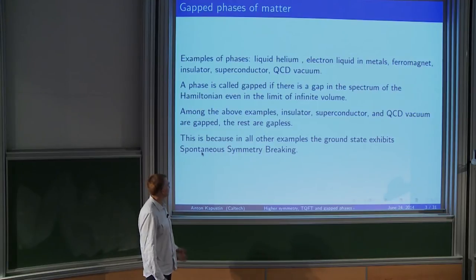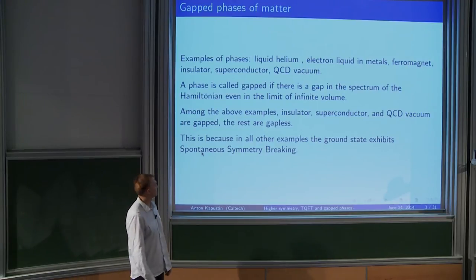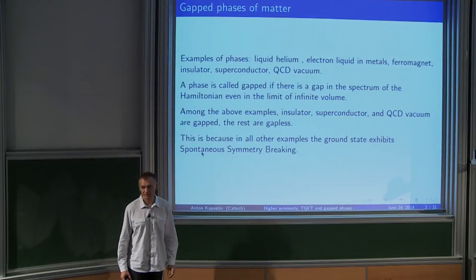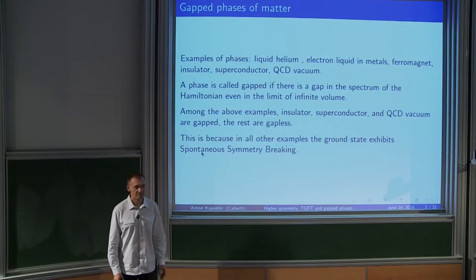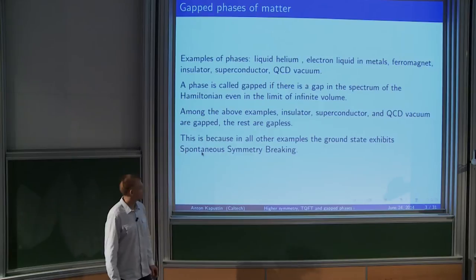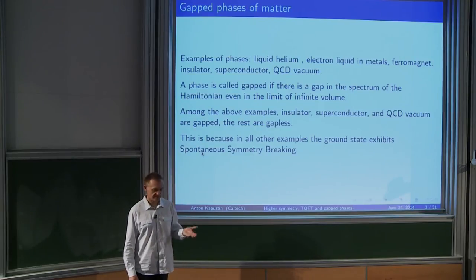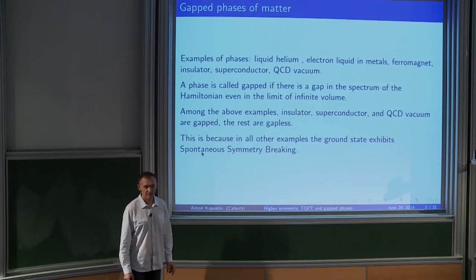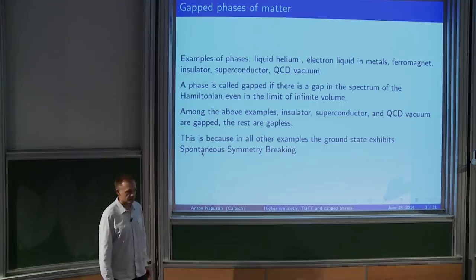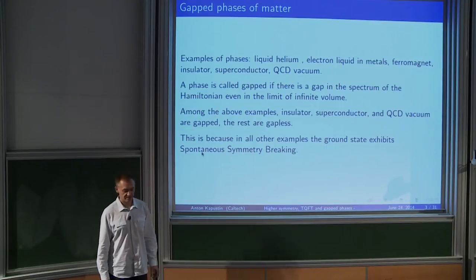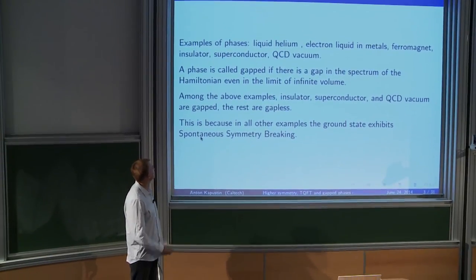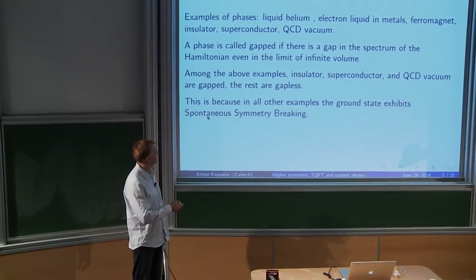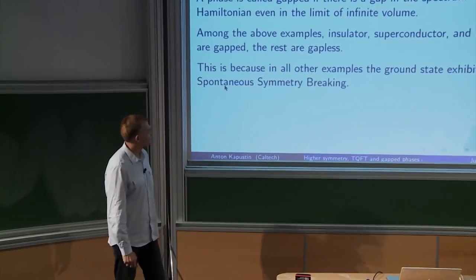The most rough classification of phases is into gapped and gapless phases. If you look at the quantum Hamiltonian in finite volume, there's usually a ground state and some excited states. In the limit of large volume, if there's a unique vacuum and the first excited state is separated from the vacuum by a finite amount even in infinite volume, we say the phase is gapped. Most phases we're used to are gapless because they have massless excitations like phonons or photons. But in this list, there are some gapped ones too: insulators are gapped, superconductors are gapped, QCD vacuum is also gapped.